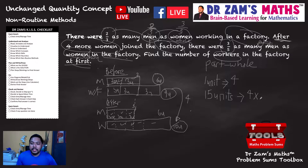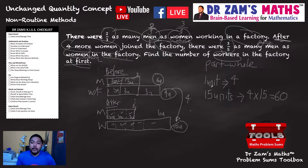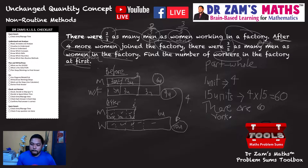If you don't want to make careless mistakes, use your calculator to confirm. In this case, four times fifteen is sixty. How many workers are there in the factory at first? There are 60 workers at first.